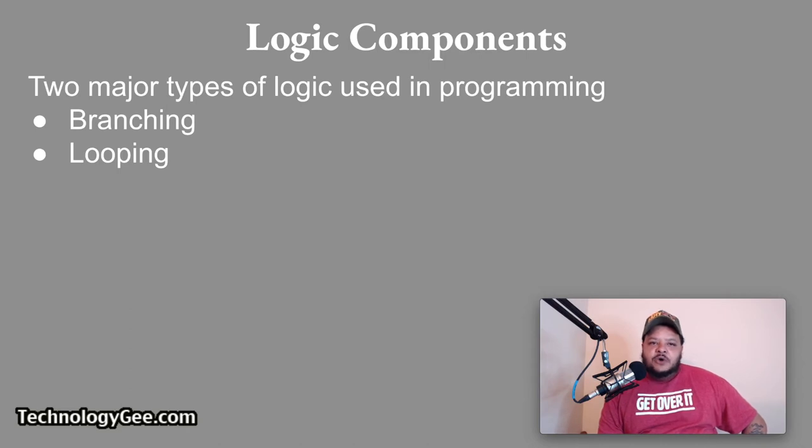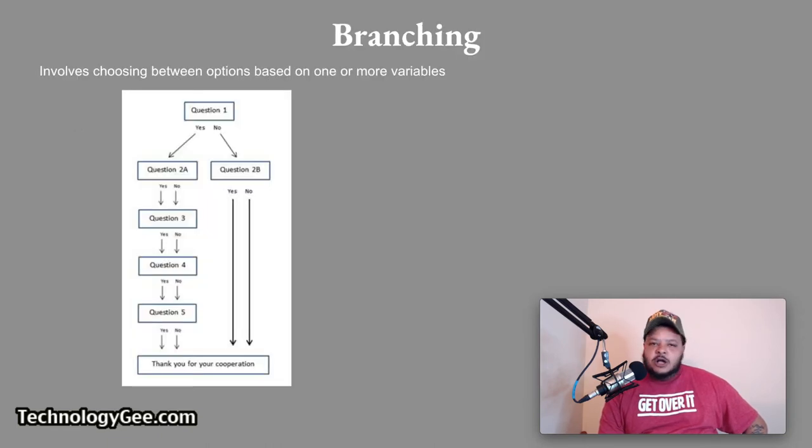All right, logic components. So branching and looping are the two major types of logic used in programming. Let's talk about branching. So branching involves choosing between options based on one or more variables. And as you can see in the picture here, it should be pretty self-explanatory. So you go to question one, either the question's right or is not, yes or no, and you just flow down the path until you get to your final destination.